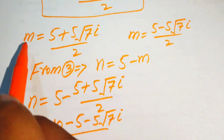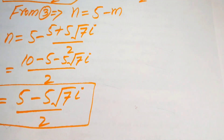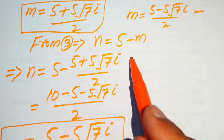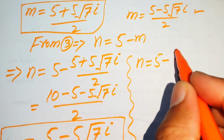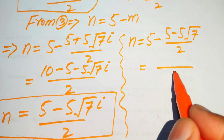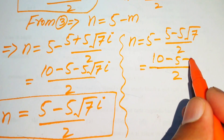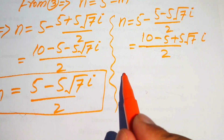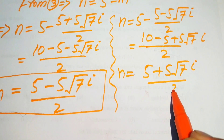Similarly, for the second value of m equals (5 minus 5√7·i) divided by 2, we substitute into n equals 5 minus m. Taking the LCM of 2, we get (10 minus 5 plus 5√7·i) divided by 2, which simplifies to n equals (5 plus 5√7·i) divided by 2.